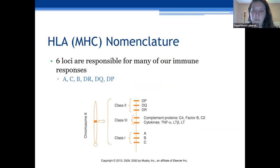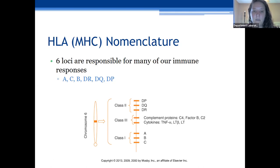There are six loci responsible for many of our immune responses, divided into three classes. Class one has loci A, B, and C — the ankylosing spondylitis B27 is at the B locus, antigen site 27. Class two is your DP, DQ, and DR loci sites. Class three contains complement proteins such as C4, factor B, C2, and tissue necrosis factor as well.